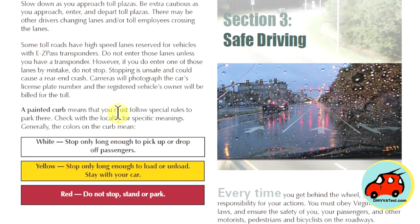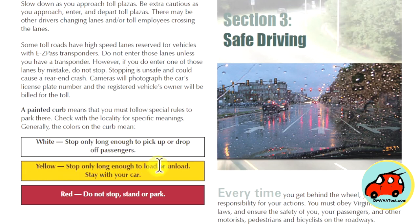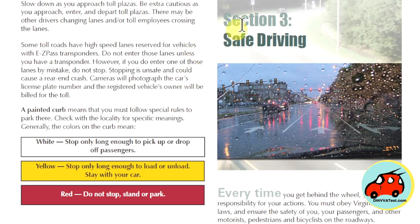A painted curb means you must follow special rules to park there — check the locality for specific meanings. Generally: white means stop long enough to pick up or drop off passengers; yellow means stop long enough to load or unload and stay with your car; and red means do not stop, stand, or park. In the next section, we're going to be talking about safe driving in Section 3.